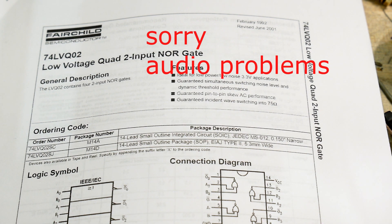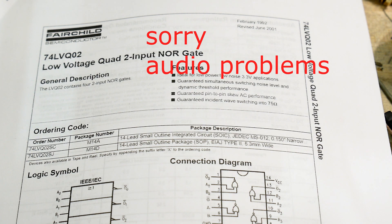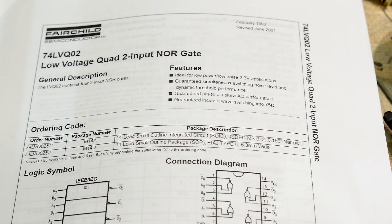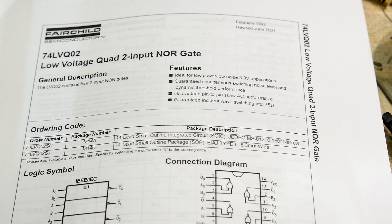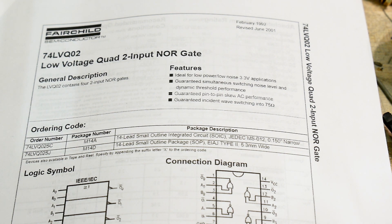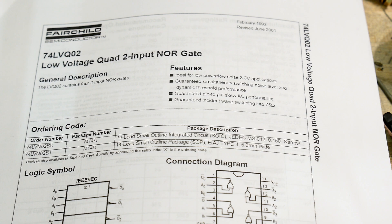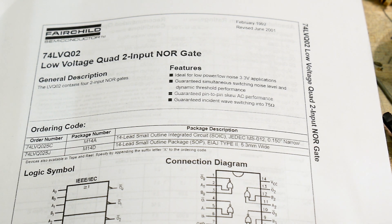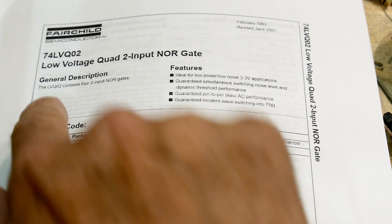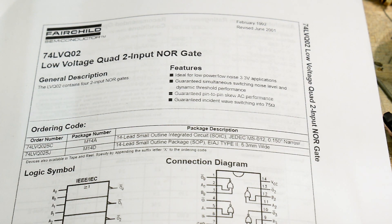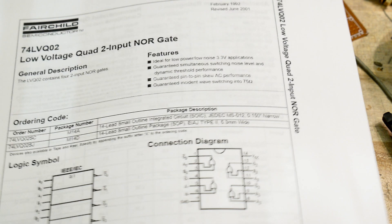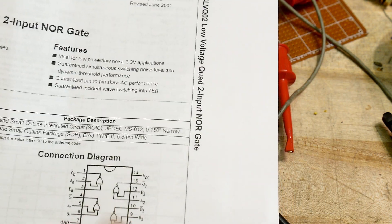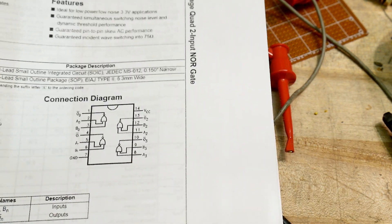Chip of the day! Everybody likes chip of the day, so the chip of the day is a 74LVQ02. It's a 7402 but in the TTL family of LVQ, which I have no idea what that is. It says low voltage, so let's take a look at the datasheet. It looks just like a quad NOR gate.